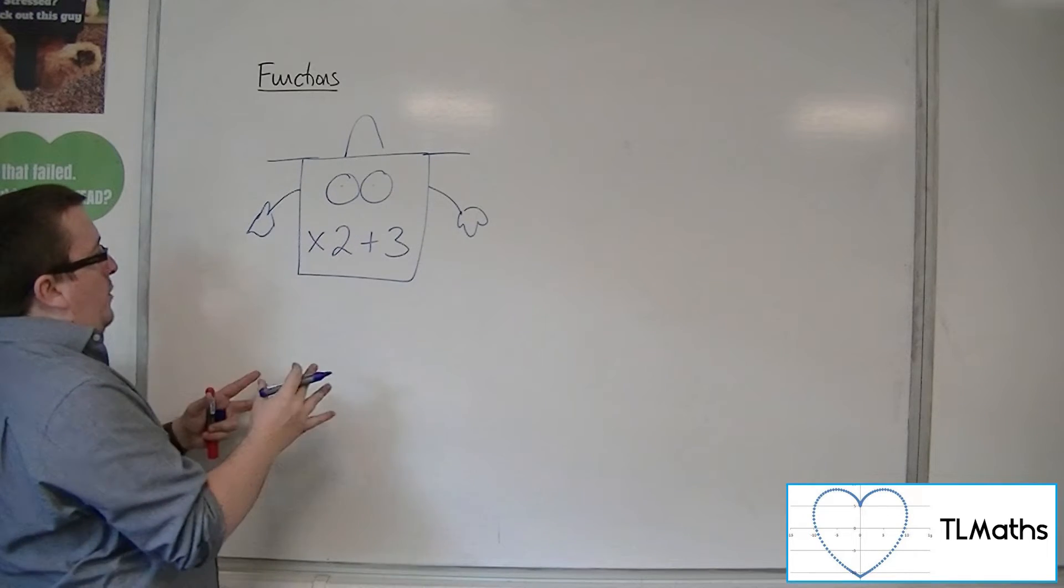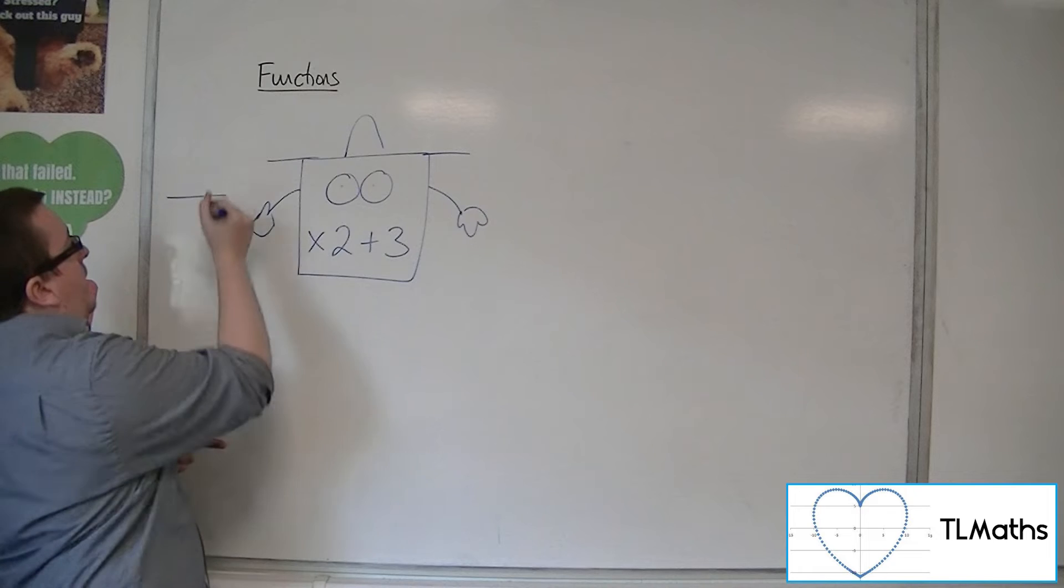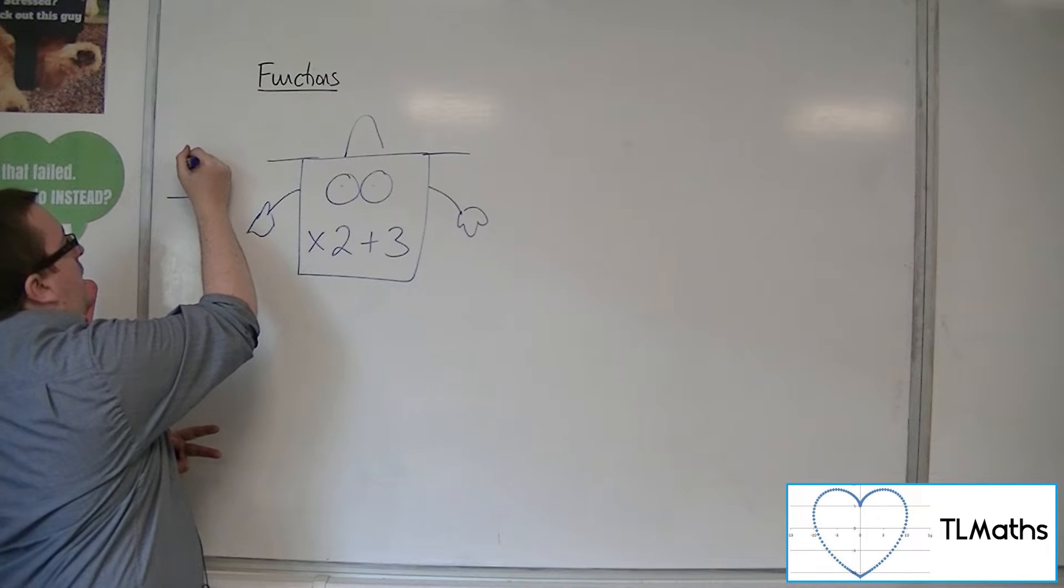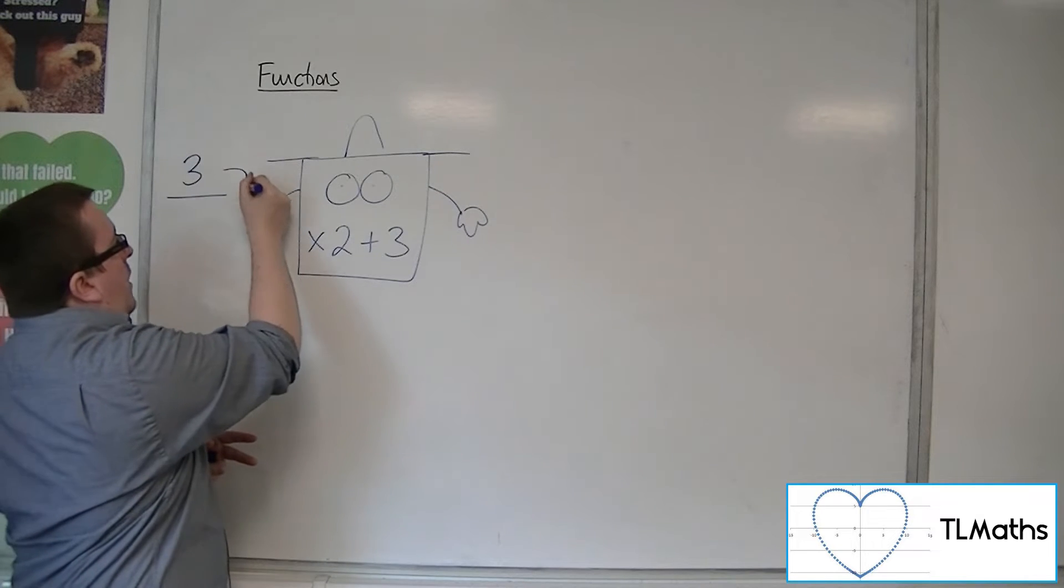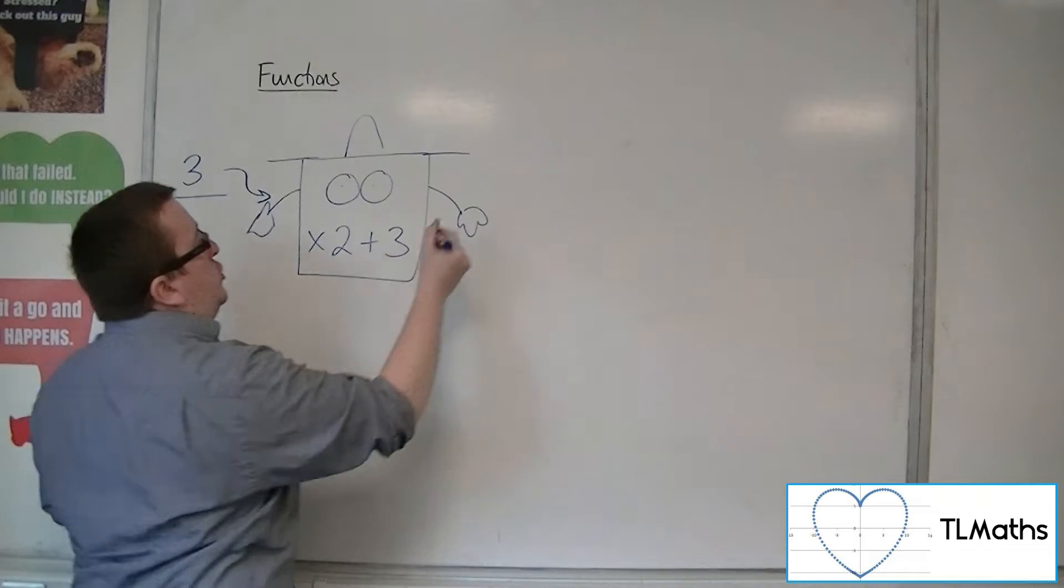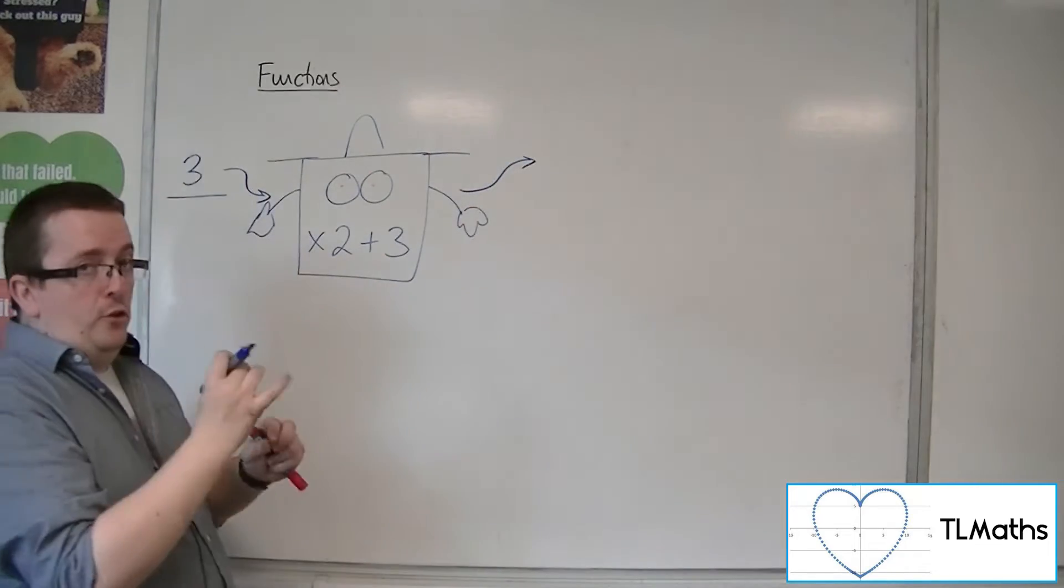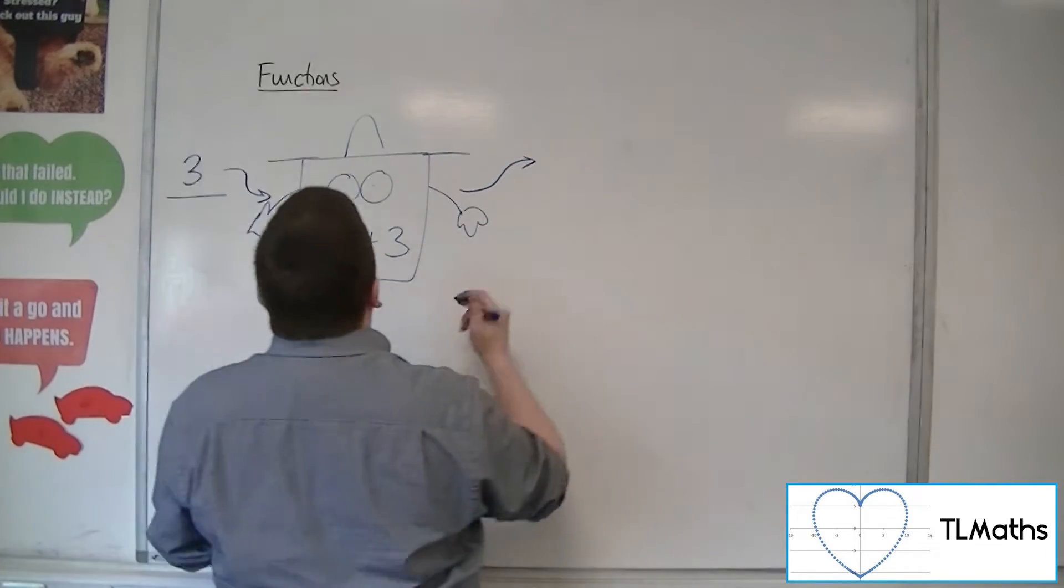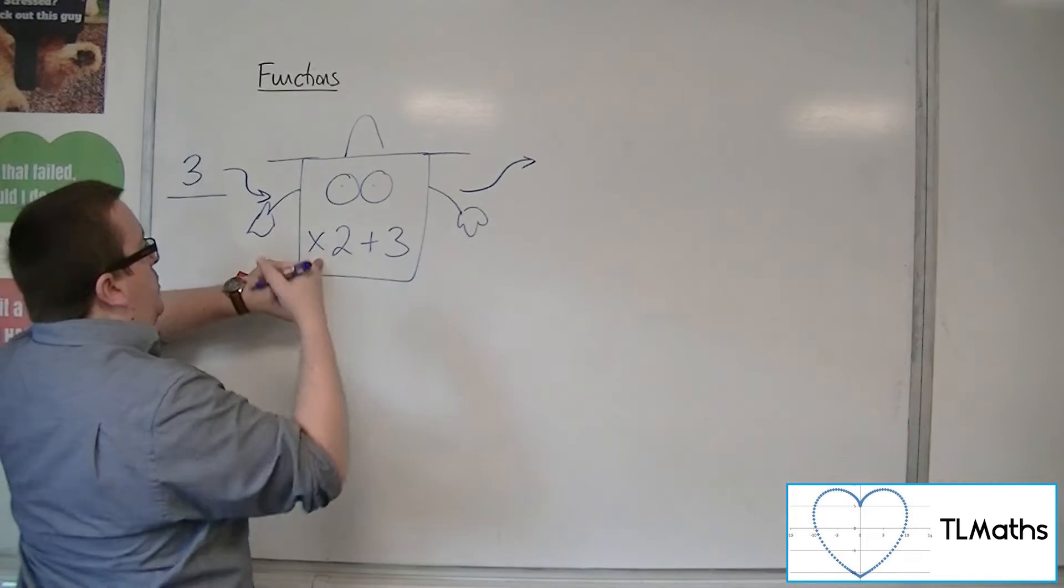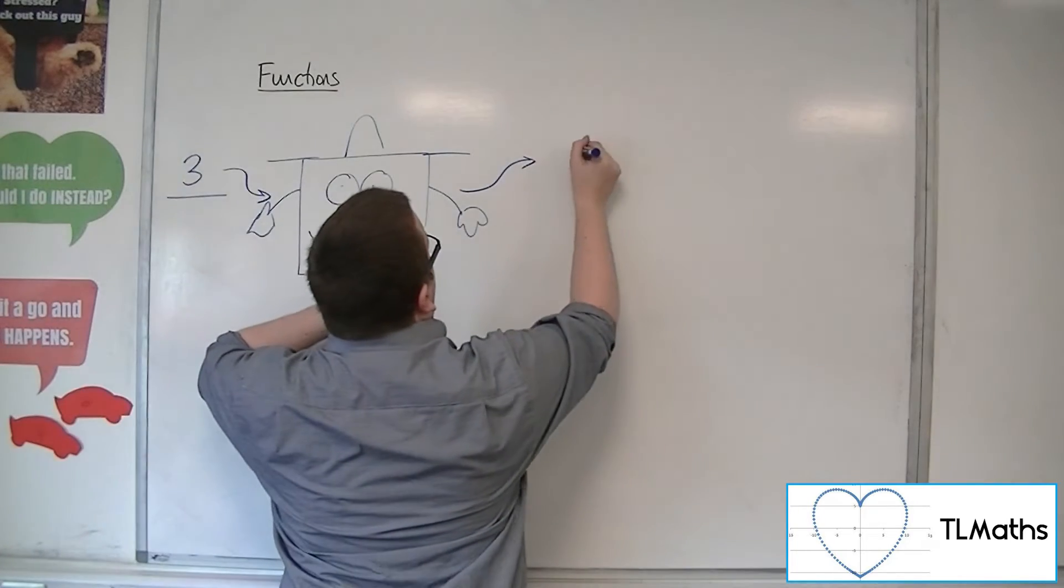So when I put a number in, let's say 3, I put a number into my function machine and I got out a single value. So 3 times 2 plus 3 gets me 9.